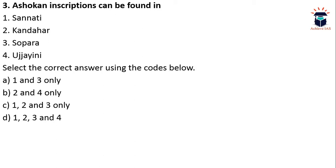The next question asks: Ashokan inscriptions can be found at — 1) Sanati, 2) Kandahar, 3) Sopara, 4) Ajaini. Friends, if you have read the NCERTs in detail, you should be able to solve this quite easily because there is a detailed map in your NCERT regarding Ashokan inscriptions and the extent of his empire. The inscriptions of Ashoka were found all over — all the places listed are included.